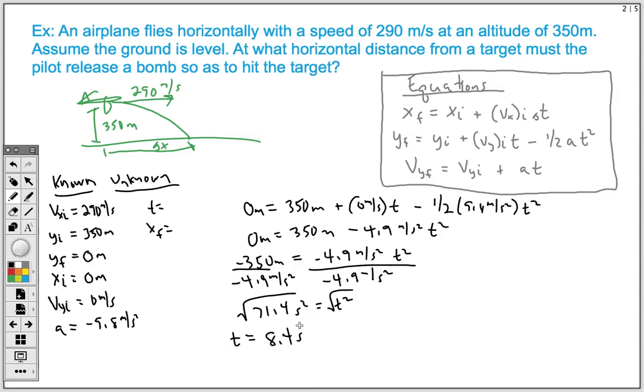We needed to solve our time so that we can plug it into this top equation to end up solving for what the problem asked for, which was our final distance. So XF, we don't know what that is. That's going to equal our initial position horizontally, which is zero meters. And we're going to add that to our initial horizontal velocity, which was 290 meters per second. Multiply that by the time that we just solved for, 8.4 seconds. This becomes a relatively easy problem. At this point, just multiply the 290 and the 8.4, and we end up with our answer of 2,436 meters.